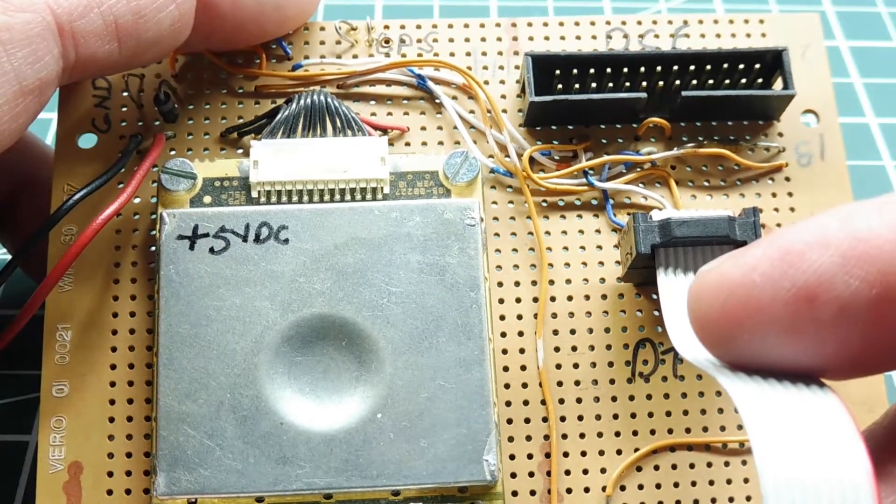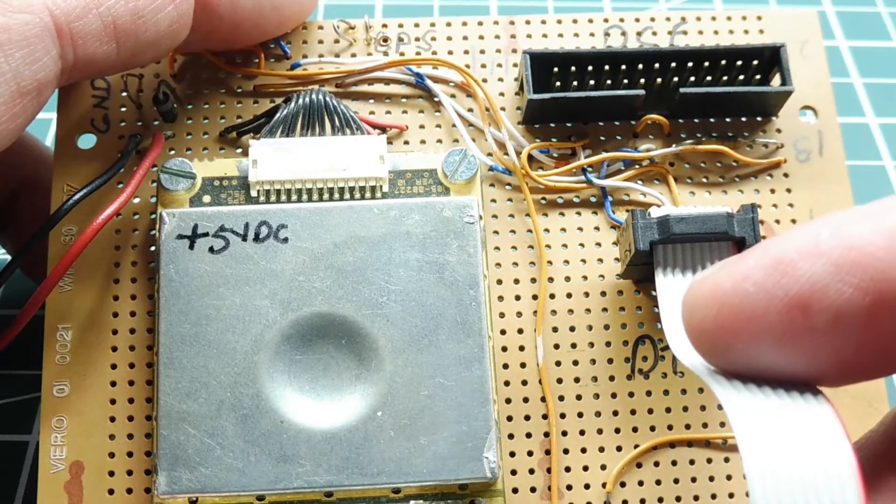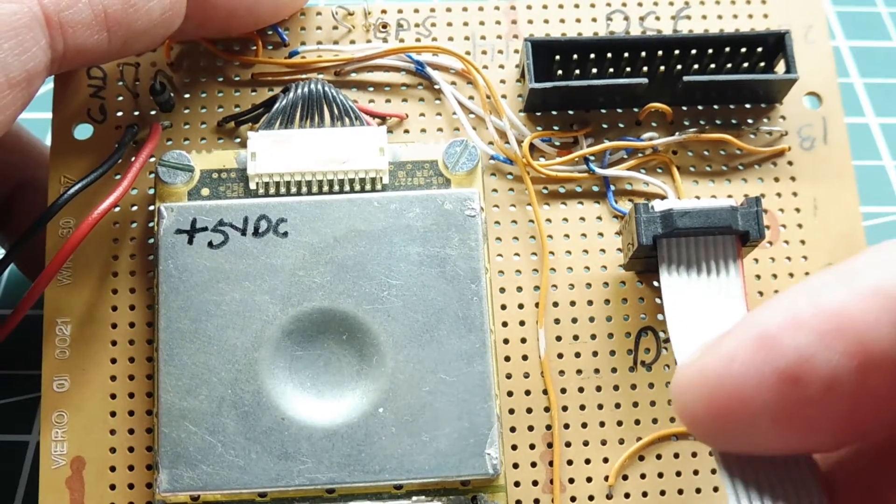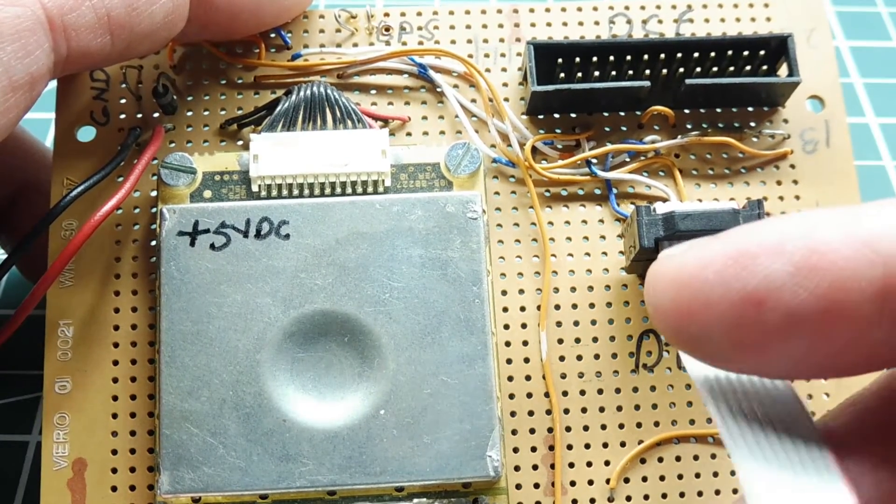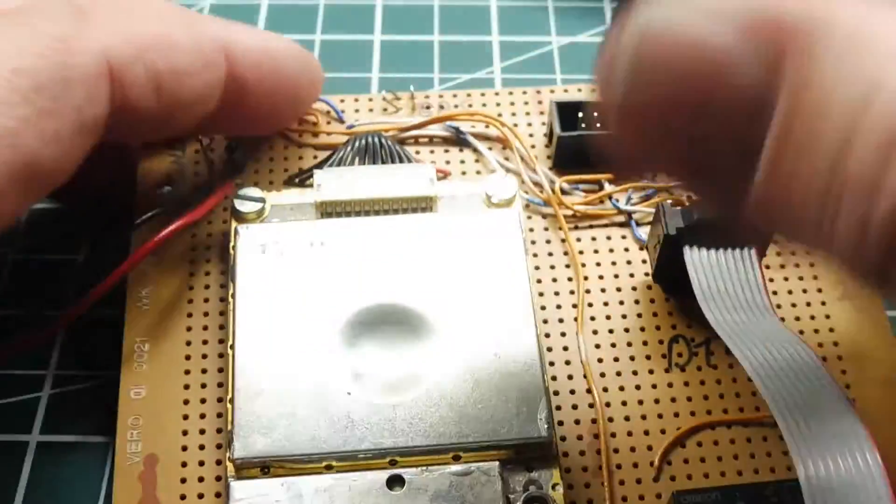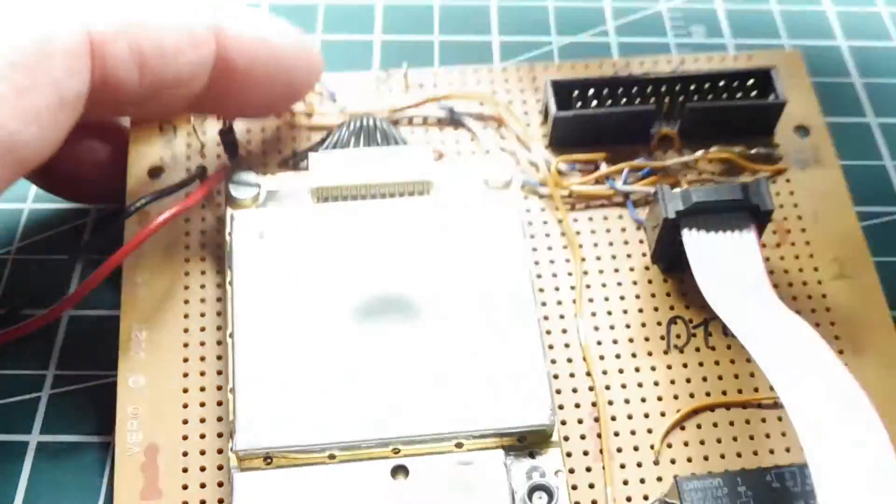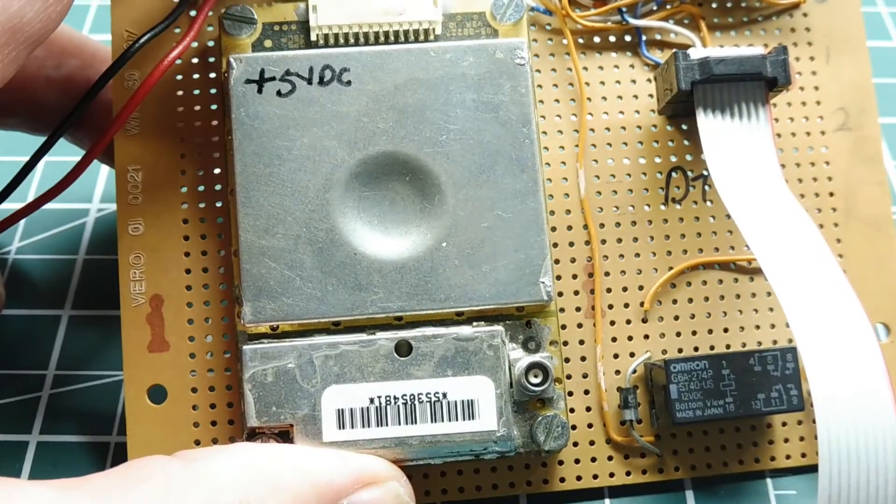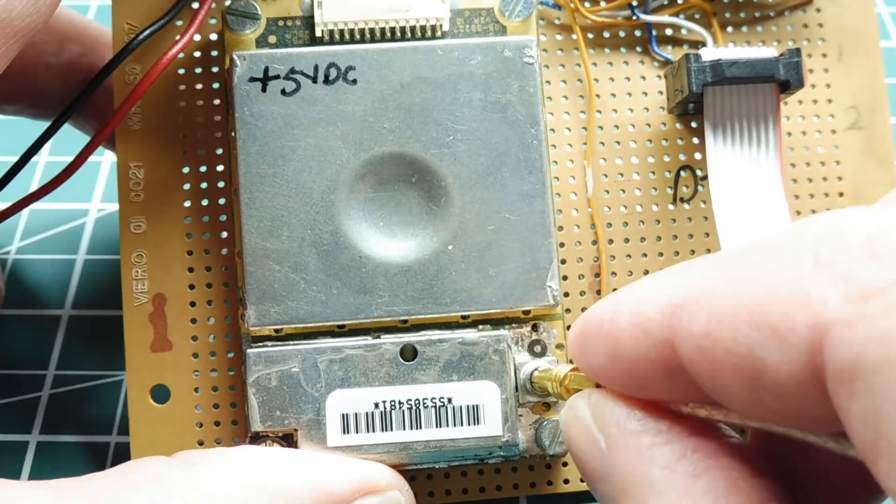And you can run a program like TerraTerm or PuTTY, and you can view the NMEA strings that are sent out every one second that contain the lat-long information. Now there's also an antenna for this GPS. It's external, so it looks like there. And a connector for the antenna is right here. It's a little MCX-RF connector.